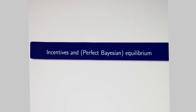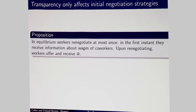In equilibrium, what does transparency do to negotiations? Transparency doesn't do much for renegotiations in terms of outcomes — it affects the timing but not how it happens. The result is that workers will renegotiate at most one time, and they'll do this at the first instant they see the transparency process and learn the wages of their peers. Because of the continuum of workers, they'll see the highest wage — say $11 — infer that $11 is actually W bar, ask for $11, and get it exactly. Workers upon renegotiating get W bar and never renegotiate without information.